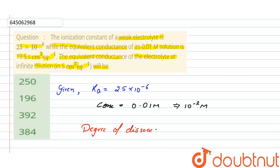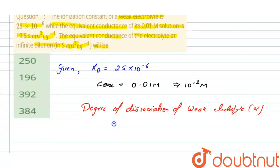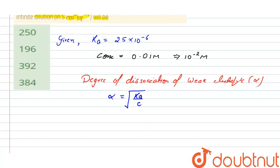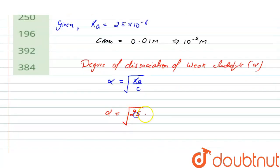Now, the degree of dissociation of a weak electrolyte is given by α, and the formula is α = √(Ka/C). The value of Ka is 25×10⁻⁶, so alpha = √(25×10⁻⁶ / 10⁻²).